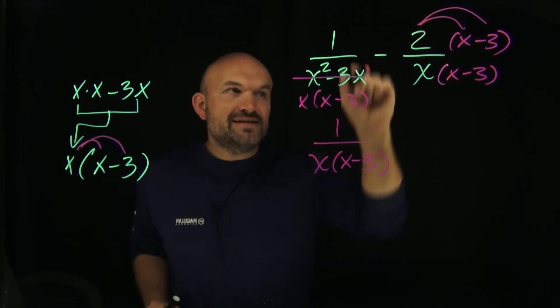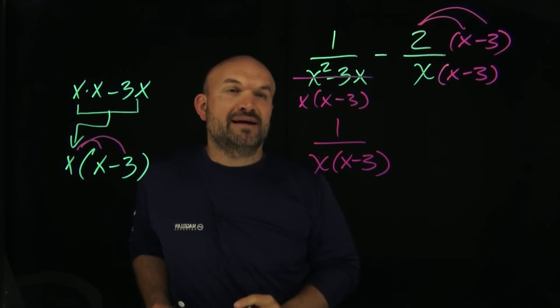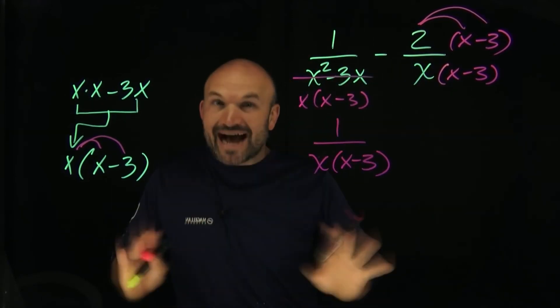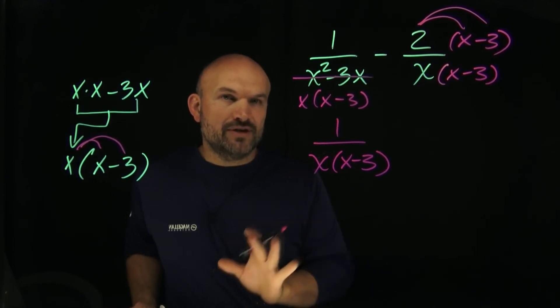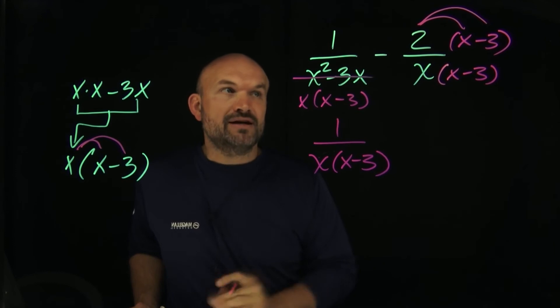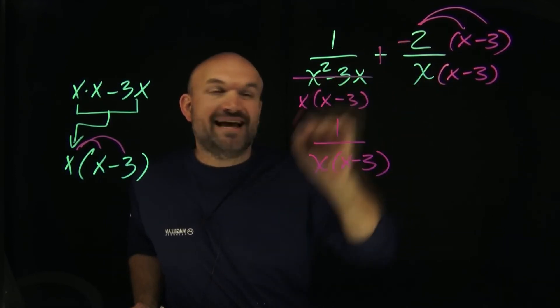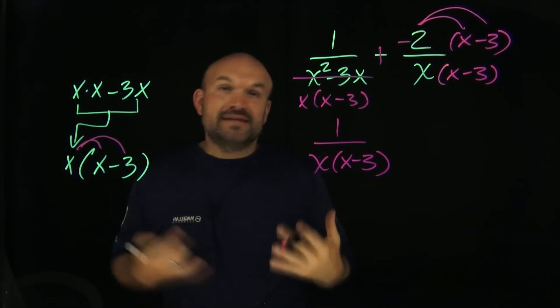The problem is we're not going to want to multiply this by positive 2. We're actually going to want to multiply by negative 2. What I like to do whenever I see subtraction is convert it. I don't want to do subtraction; I want to do addition. To preserve the operation correctly, I'm going to change the subtraction to addition of a negative.